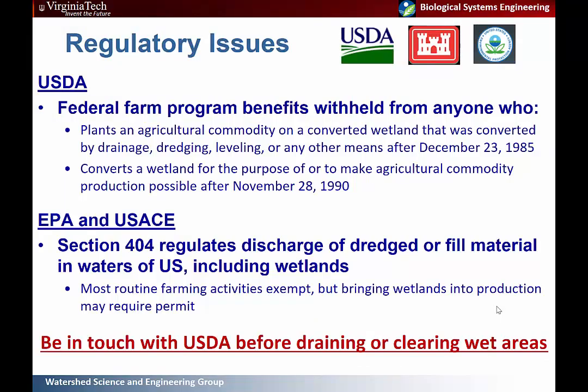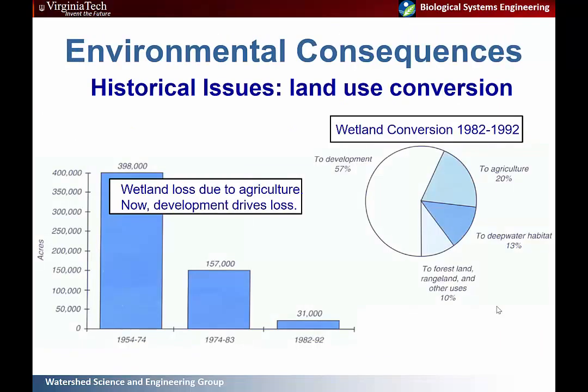Touching on regulatory issues: be in touch with the USDA before draining or clearing any wet areas. There are regulations through the Clean Water Act relating to discharge of dredged or fill materials into waters of the U.S., including wetlands. There are also provisions withholding benefits for growing agricultural commodities on wetlands converted after 1985 or converting wetlands after 1990. However, these land-use conversion issues are mostly historical — since the 1950s there's been a dramatic decrease in wetland loss due to agriculture. From 1982 to 1990, almost 60% of wetland loss was due to development.